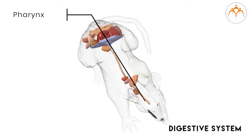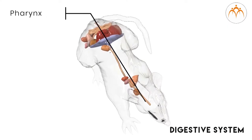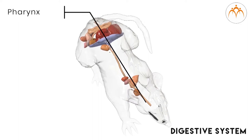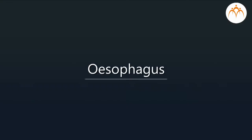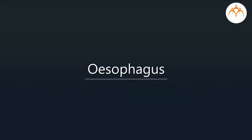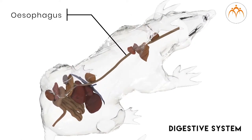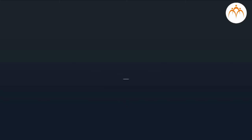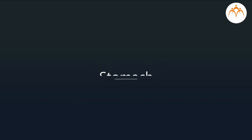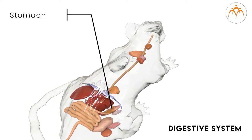Remember that the pharynx is a common part of both the digestive and respiratory systems. The esophagus is a tube connecting the pharynx and stomach; food passes through this tube and enters the stomach. The stomach is like a bag with a muscular wall, and it has glands inside which digest proteins from food. Food is partly digested here in the stomach.